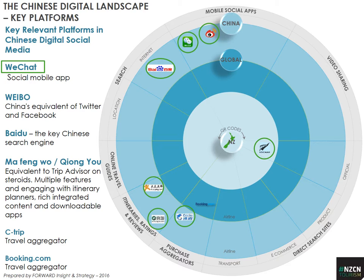Generally, if you are at the beginning of your digital journey, don't worry too much about Baidu. The very important itinerary rating and review sites are Ma Fong Wu and Chong Yeo — described as like TripAdvisor on steroids. Not only are itineraries posted and shared, but you can do incredible searches, purchasing, and even get travel insurance. All of the Chinese digital platforms are very multi-layered. There are also travel aggregators like Ctrip where a lot of accommodation bookings happen, and Booking.com is also extensively used by Chinese for booking accommodation.